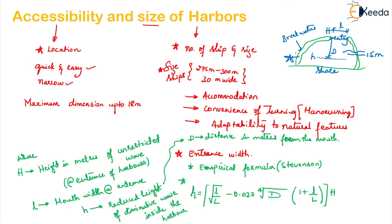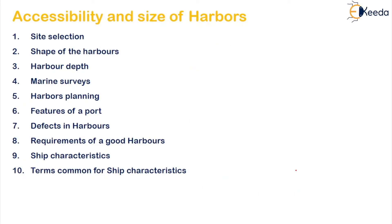Only if these two conditions are satisfied can you use this particular formula given by Stevenson. There are many other factors which will affect the accessibility and size of the harbour. The accessibility and size of the harbour will depend upon ten things.